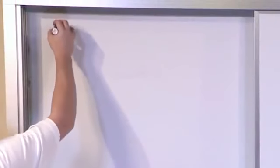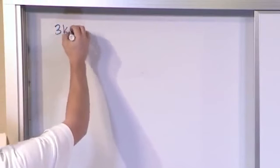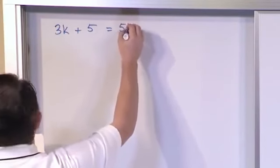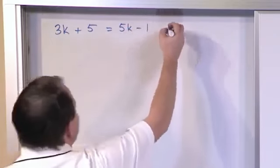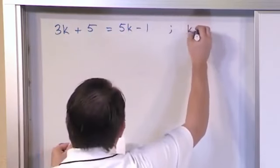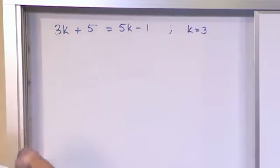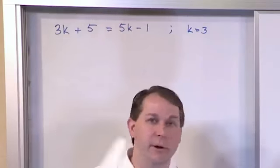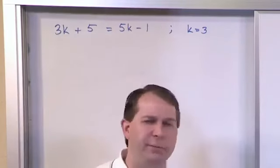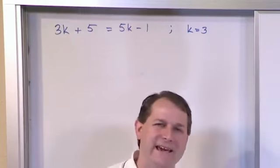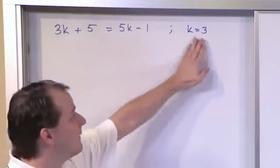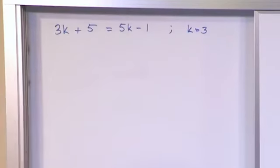We'll do one more of this type. Let's say we have 3 times k plus 5 is equal to 5 times k minus 1. And we're going to ask ourselves, is k is equal to 3 the solution to the equation? Notice again, we have k in two places. That's okay. You can see the variable on both sides of the equal sign and multiple places, whatever. k is the unknown. I don't know what k is. Of course, in this particular problem, I'm asking, is k equal 3 the solution?